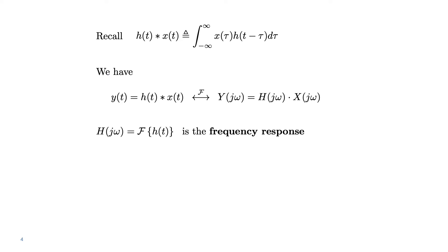Let's recall the definition of convolution. The convolution between two signals h(t) and x(t) is given by the integral of x(τ) h(t−τ) dτ. It has the property of being commutative, so the convolution between h and x is the same as the convolution between x and h. In particular, x(t) usually denotes the input and h(t) usually denotes the impulse response, and the result y(t) is the output of the LTI system.